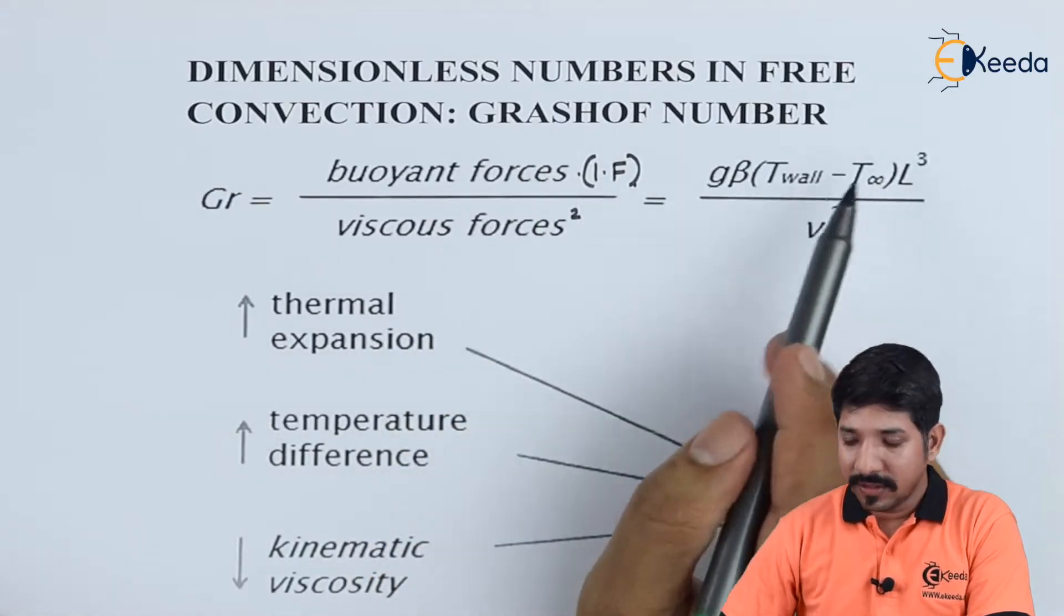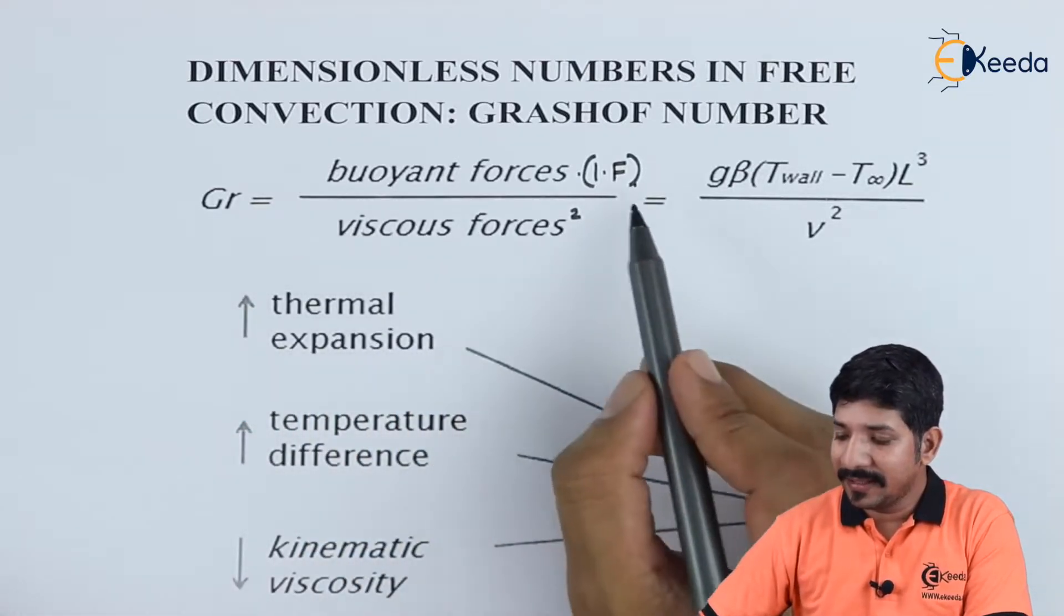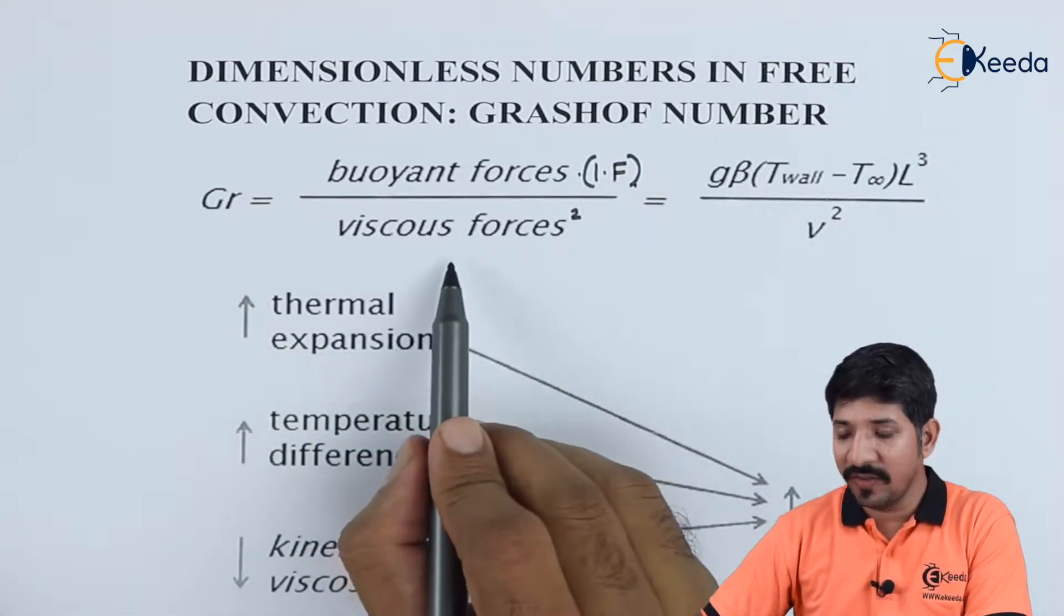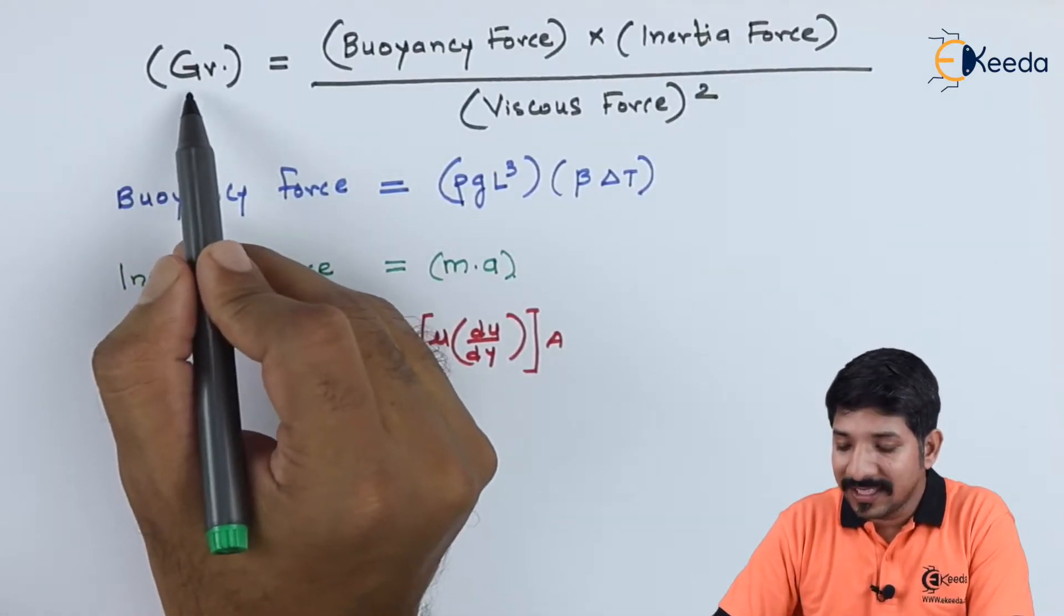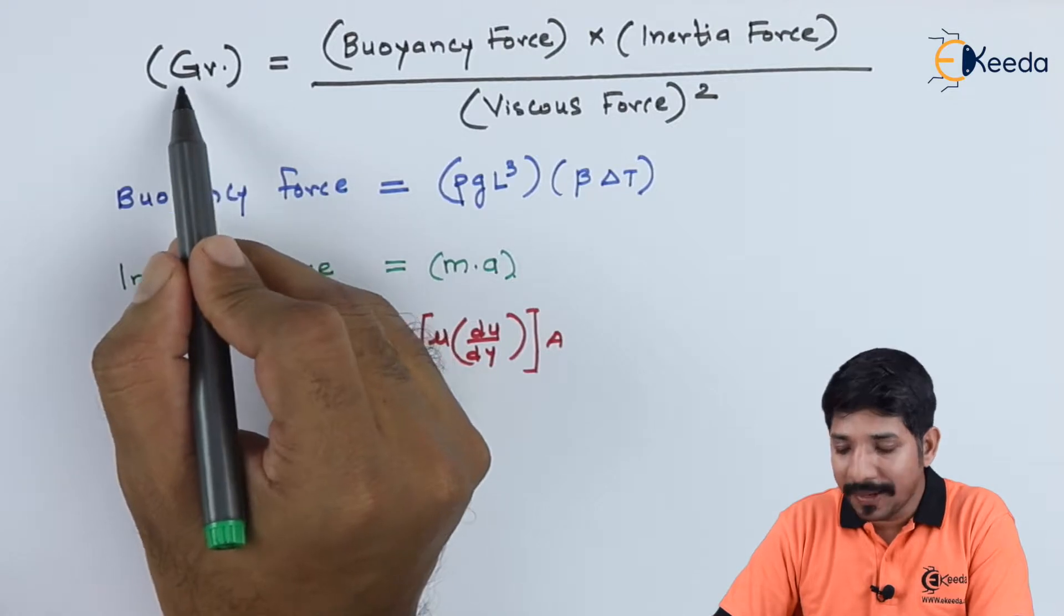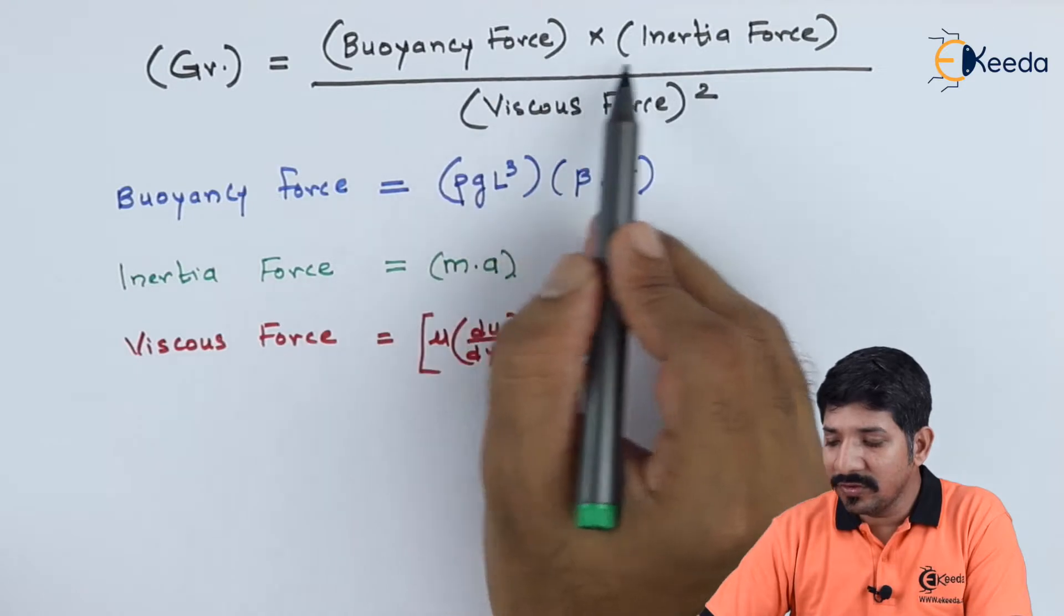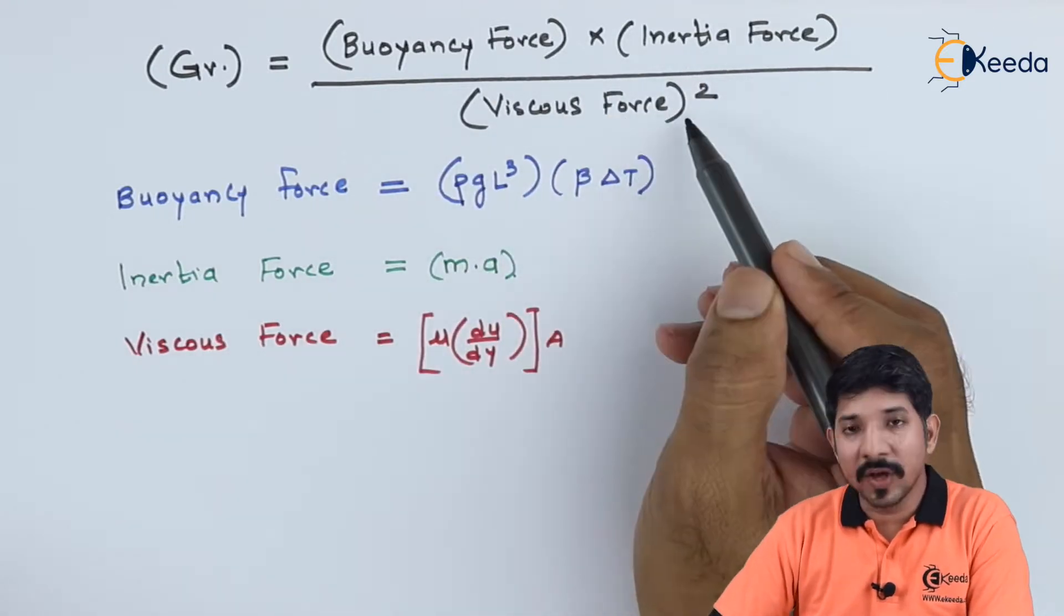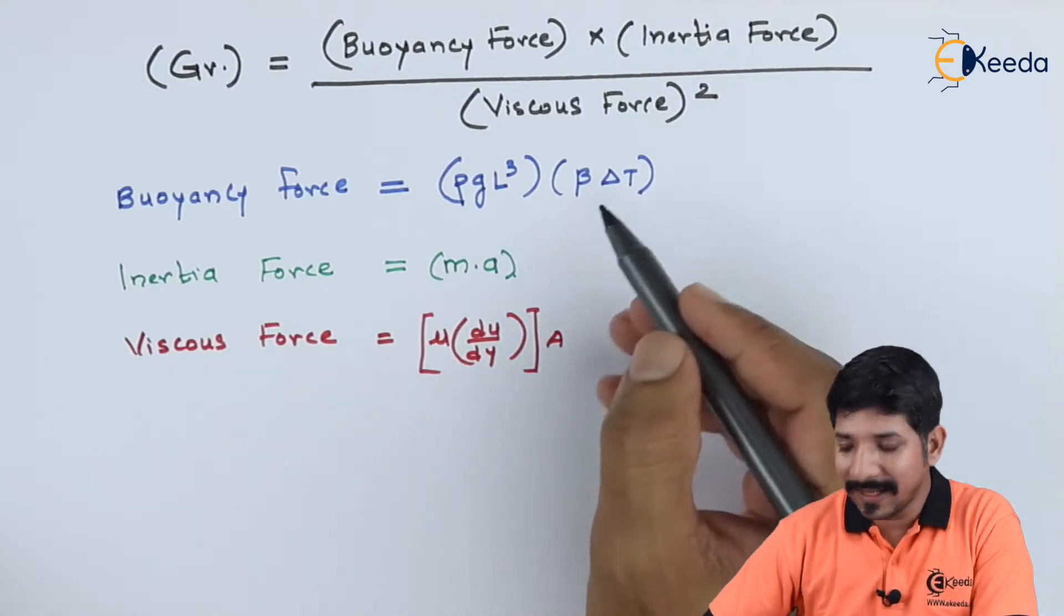Grashof number, it is nothing but the product of buoyant force and the inertial force upon the square of viscous force. As I explained, the Grashof number which is indicated by capital G into small r, it is defined as the product of buoyant force and inertial force to the square of viscous force. Now, let us go about a small mathematical exercise.